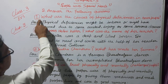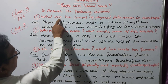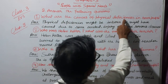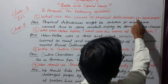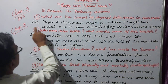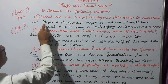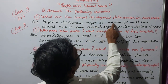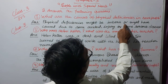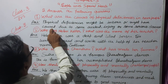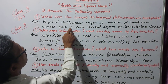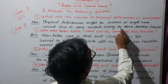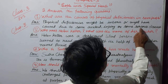Number 1: What are the causes of physical deficiency in some pupils? Answer: Physical deficiencies might be caused due to some accident, injury, or some serious disease.